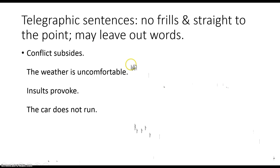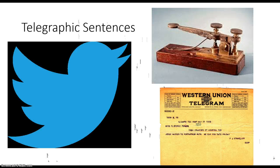A telegraphic sentence is simply a no-frills, straight-to-the-point sentence — words may be left out so that you can get straight to the point. Here are some examples: 'Conflict subsides.' 'The weather is uncomfortable.' 'Insults provoke.' 'The card is not run.' You may have noticed these in the text we're reading — in particular act two is a good place to look for telegraphic sentences. No frills, straight to the point, may leave out words, very short sentences — they were short because telegrams needed to be short, much like tweets now need to be short.